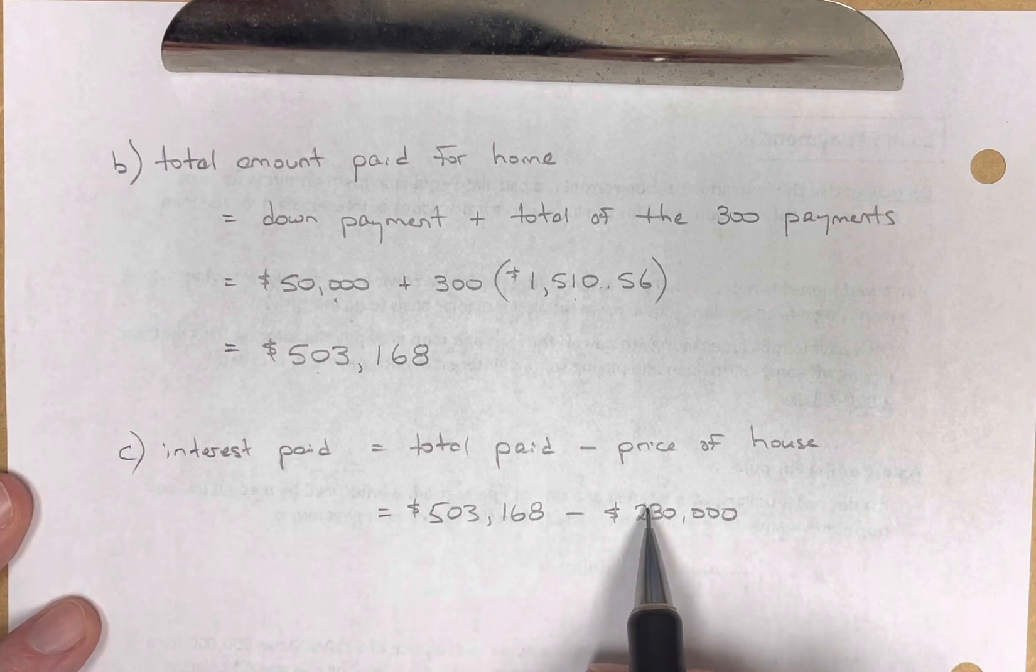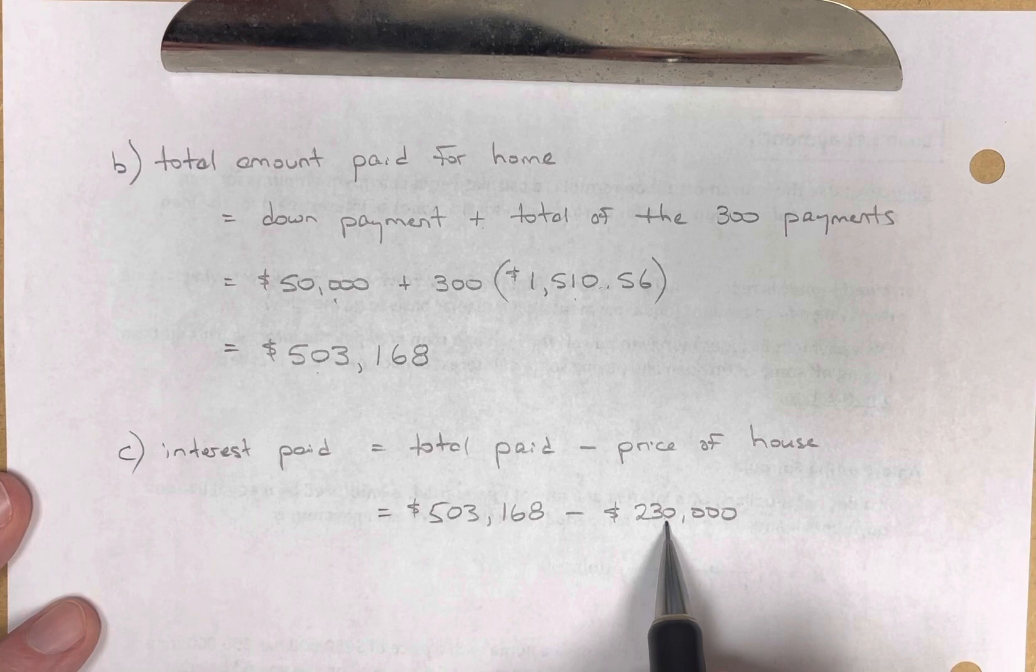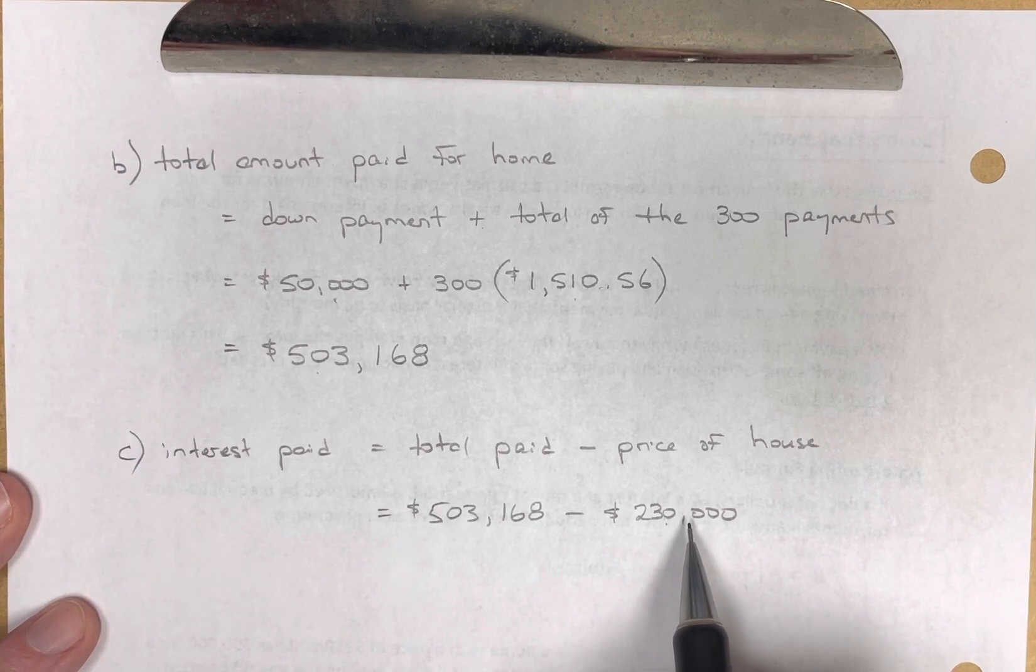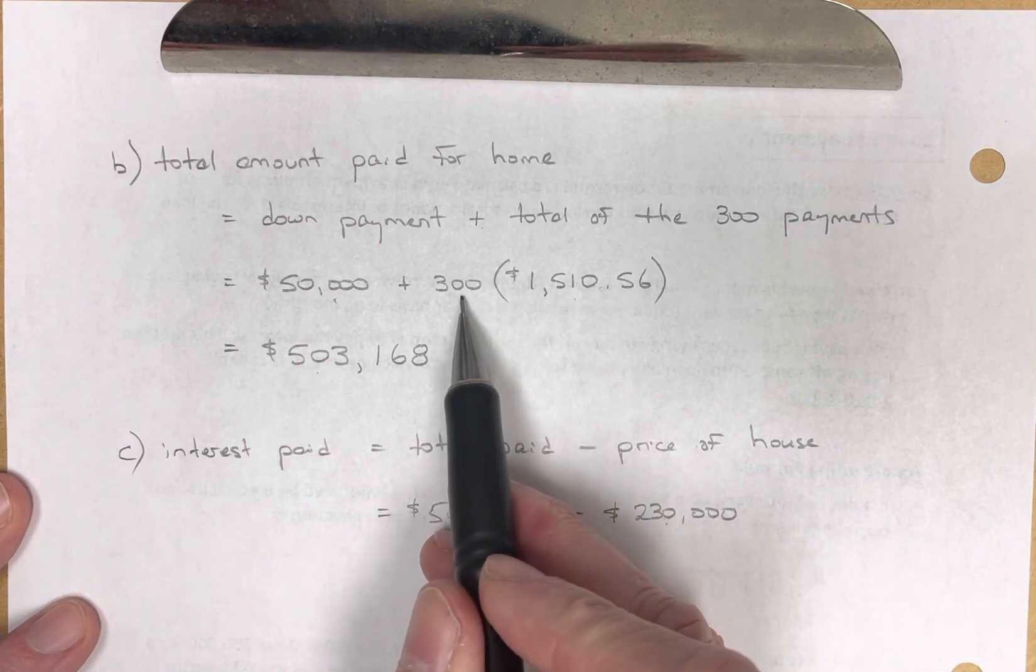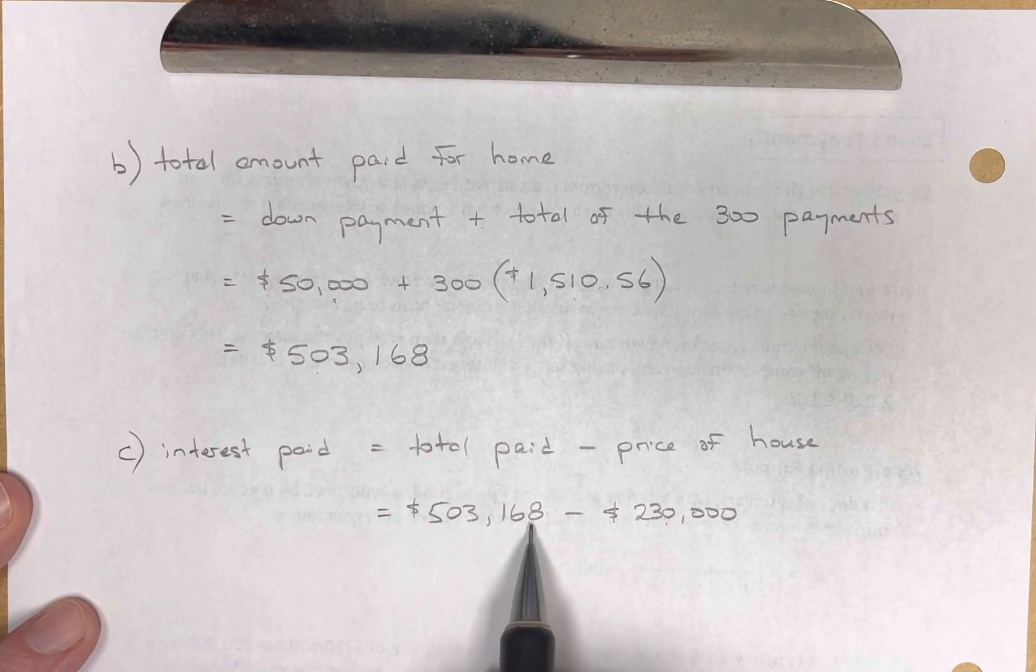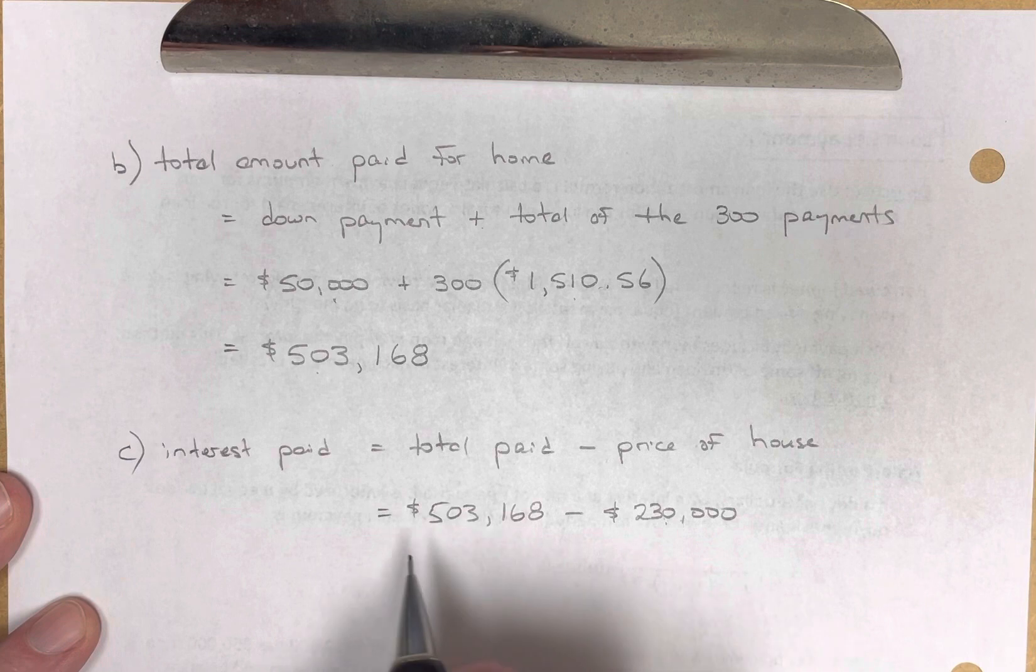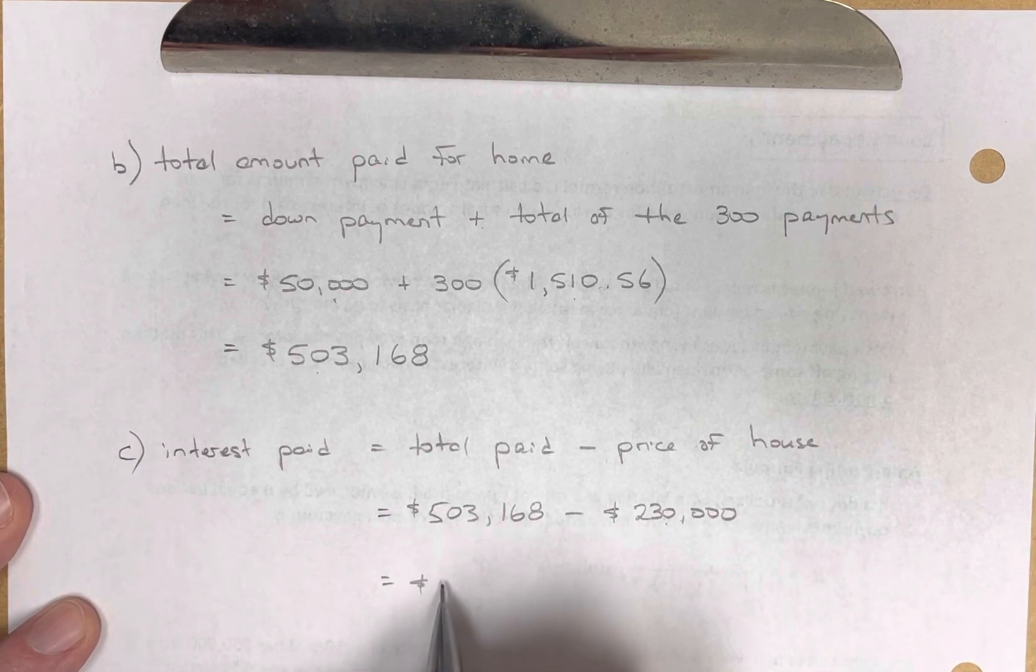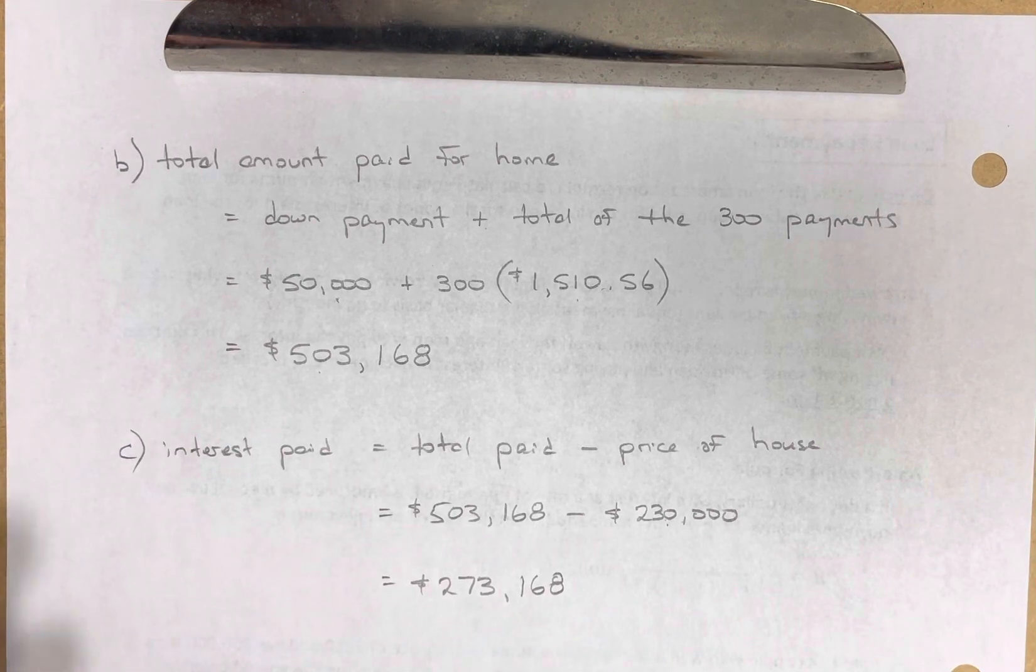So if they had the money to pay it all at the beginning, they would have paid $230,000, and they would have owned the house on day one. They didn't have $230,000. Most of us don't. They had $50,000, and they had to borrow the other $180,000, and they paid that back over 25 years. And so this was the total that the house cost them with the borrowing fee. It would have cost them this had they had the cash and not had to borrow. So we subtract these two numbers, and the interest they paid was $273,168, the amount of interest paid.